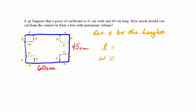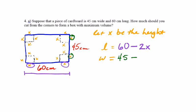For the length: we know that from one end to the other is 60 centimeters, but when I take away this x and this x, I'll no longer have 60 centimeters. I'll have 60 minus 2x because I'm taking away two of the x's. So the length of the box will be 60 minus 2x. For the width, it will be very similar: 45 minus 2x. So the height is x, the length is 60 minus 2x, and the width is 45 minus 2x.